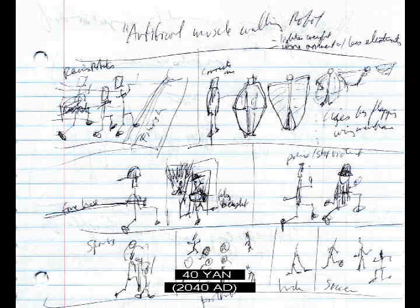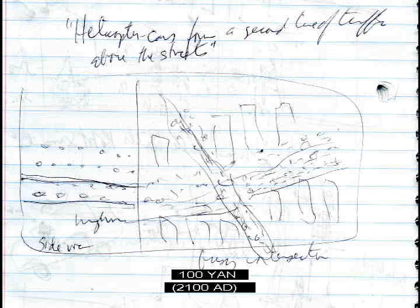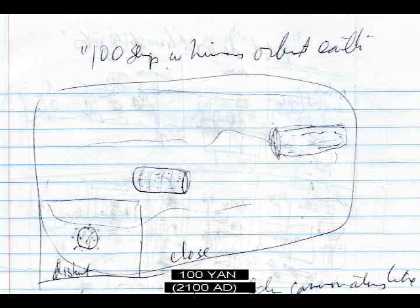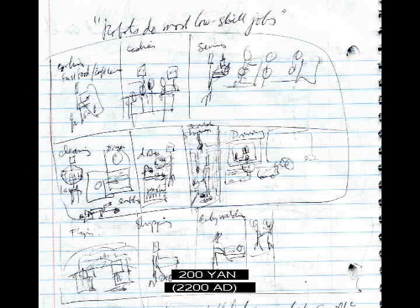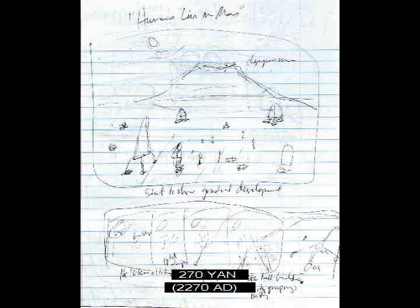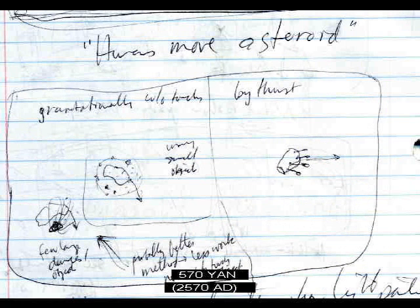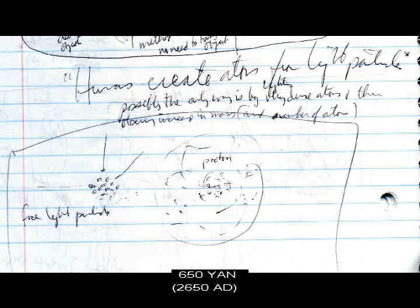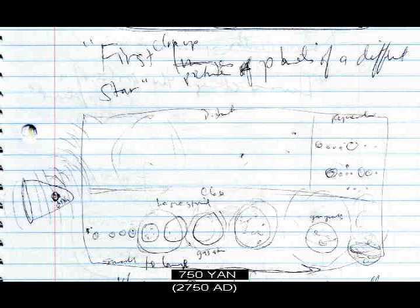Humans start to communicate by thought image and thought sound only. Microscopic flying camera. Artificial muscle bipedal robot. Humans walk with robot servants. Most humans communicate only by images and sounds of thought. Helicopter cars form a second line of traffic above the streets. 100 ships with humans orbit Earth. Large-scale transmutation — common atoms like iron converted into hydrogen and oxygen using particle colliders. Robots do most manual labor tasks. 1,000 human-filled ships orbit Earth. Humans live on Mars. End of death by aging. Humans live on Venus. Humans move asteroid. Humans create atoms from light particles. Ship reaches other star: Alpha Centauri. First close-up pictures of planets of a different star.